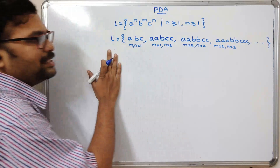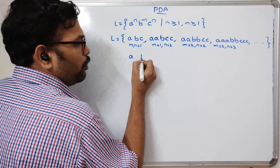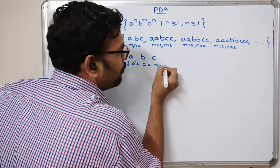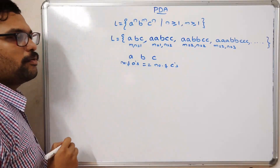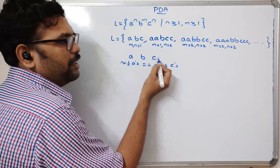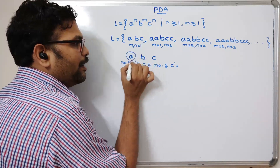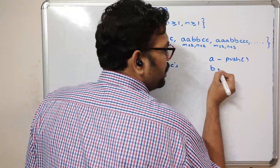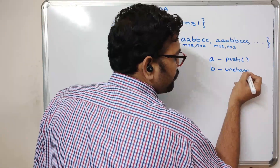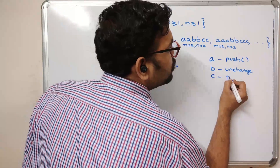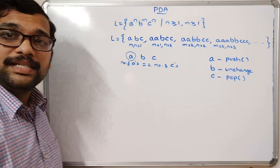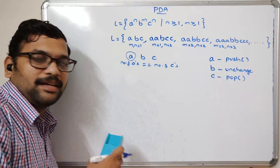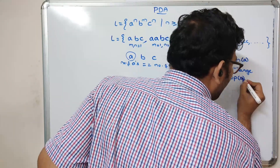Before constructing the PDA, let us analyze the language. You can see it is a followed by b followed by c, and the number of a's is equal to the number of c's. So whenever we get an 'a', we apply the push operation. Whenever we get a 'b', it remains unchanged. Whenever we get a 'c', we use the pop operation, because the number of a's pushed onto the stack equals the number of c's that will be popping them.